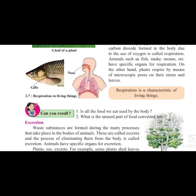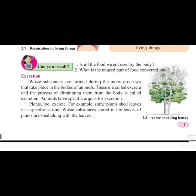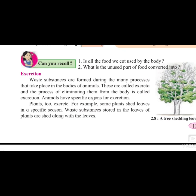The next characteristic is excretion. Excretion means the process of throwing waste substances out of your body. Waste substances are formed during many processes that take place in the bodies of animals. These are called excreta and the process of eliminating them from the body is called excretion. Elimination means removal — throwing the waste substance out of our body. This process is called excretion.